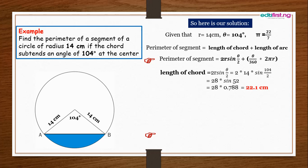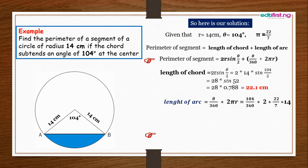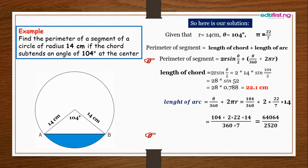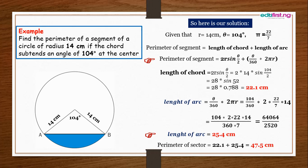Now for the length of the arc: (θ/360) × 2πr = (104/360) × 2 × (22/7) × 14. Working through the calculation gives 64,064 over 2,520, which equals a length of arc of 25.4 cm. Finally, the perimeter of the segment = 22.1 + 25.4 = 47.5 cm. So the perimeter of the segment is 47.5 cm.